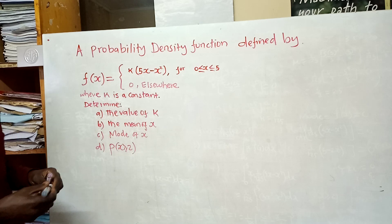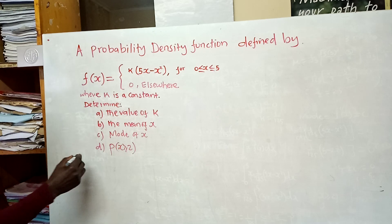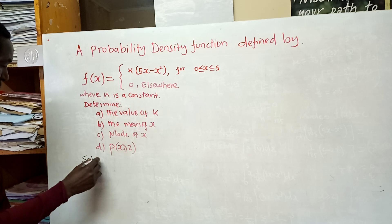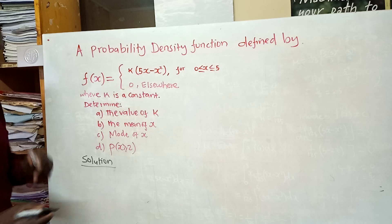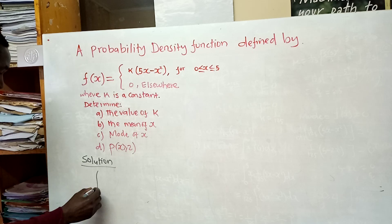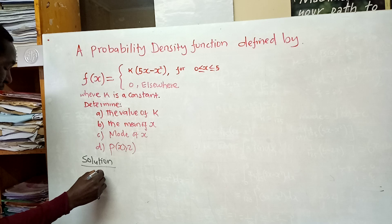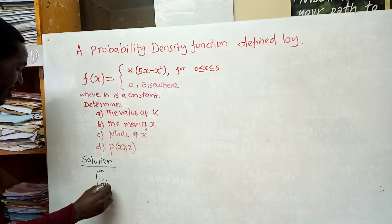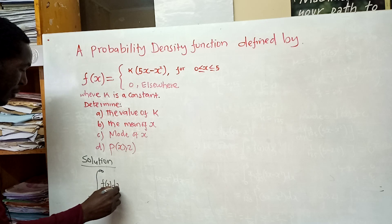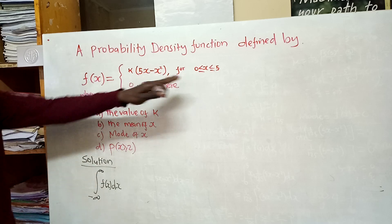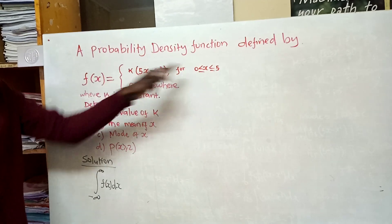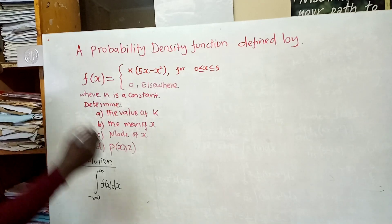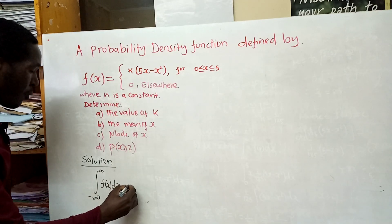Let's see how to solve this one. The solution goes as follows: we know that if we take the integral from negative infinity to positive infinity of the function of x with respect to x — that is, for all values of x where that function exists — that probability is equal to 1.